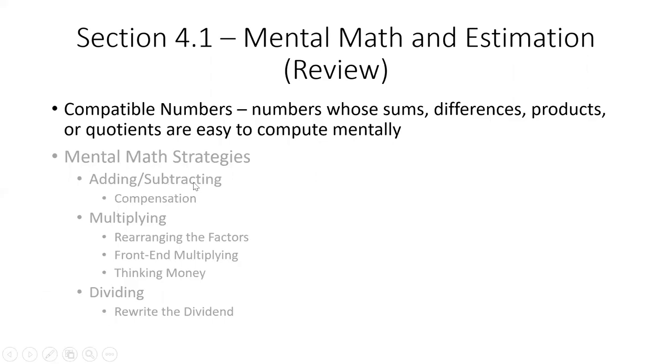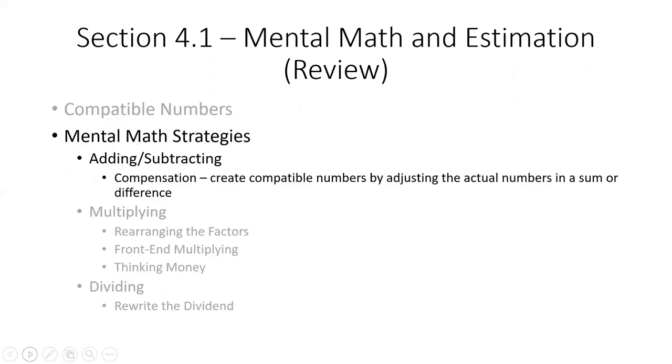So let's jump into addition and subtraction. When we're adding or subtracting numbers, we're going to do what is called compensation. Essentially, we're creating compatible numbers by adjusting the actual numbers in a sum or difference. I'm going to do a couple examples off to the side here. Let's say we're looking at 28 plus 25. One way we could do it is 8 plus 5 gives us 13, carry the 1, gives us 53.